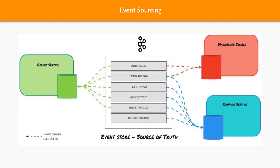So you have: order placed, order approved, order shipped, order received, order cancelled, and customer address changed. All these are a sequence of events which we are storing in the event store, and then we are sending these events to the responsible services. At any point of time if I want to check the state of a particular event — which event is being executed, which has failed — I can do the tracing, I can do the logging, and identify the state where it broke.